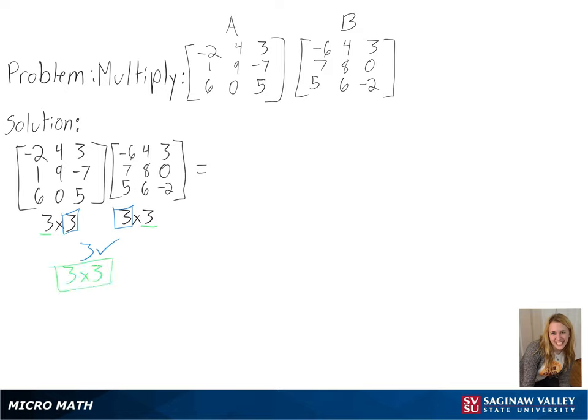So now we can go ahead and multiply. To do this, we will be multiplying the rows from matrix A by the columns from matrix B, and then adding them as we go.